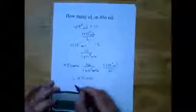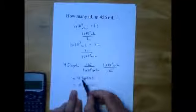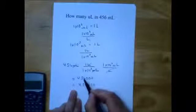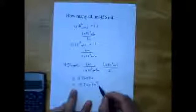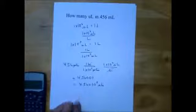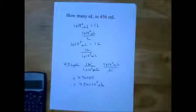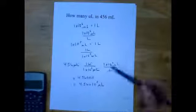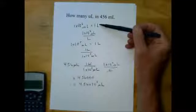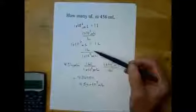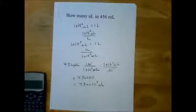456,000, and in scientific notation that is 4.56 times ten to the fifth microliters. The key is that we write down our relationships with the base unit, express them as conversion factors, and then it works out. Don't try to go directly from milliliters to microliters if you can at all help it.